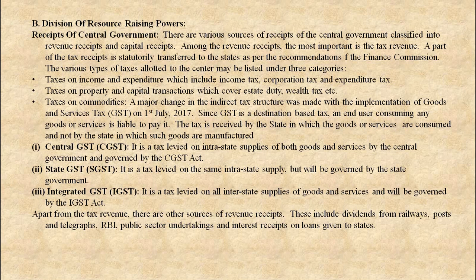Central GST (CGST) is a tax levied on intrastate supplies of both goods and services by the central government and is governed by the CGST Act. State GST (SGST) is a tax levied on intrastate supplies of goods and services and is governed by the SGST Act. Apart from tax revenue, there are other sources of revenue receipts, including dividends from railways, post and telegraphs, RBI, public sector undertakings, and interest receipts on loans given to states.